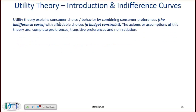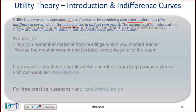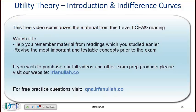Utility theory explains consumer choice and behavior by combining consumer preference, which is indifference curves, with affordable choices, which is a budget constraint.